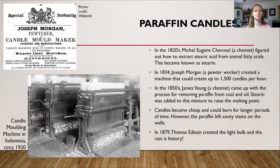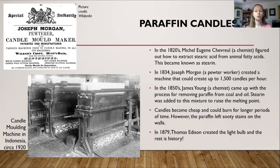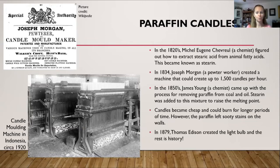And now on to paraffin candles. In the 1820s, a French chemist figured out how to extract stearic acid from animal fatty acids — this became known as stearin. In 1834, Joseph Morgan, a pewter worker, created a machine that could produce up to 1,500 candles per hour. In the 1850s, James Young, a chemist, came up with a process for removing paraffin from shale oil. The stearin — the stearic acid removed from animal fatty acids back in the 1820s — was added to this mixture of paraffin to raise the melting point of paraffin.